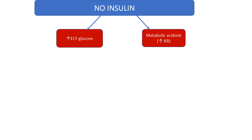Cells can't get glucose as an energy source, so they need another alternative. The liver provides that alternative: ketone bodies. These are keto acids, and they're going to cause a high anion gap metabolic acidosis because these are excess unmeasured anions.